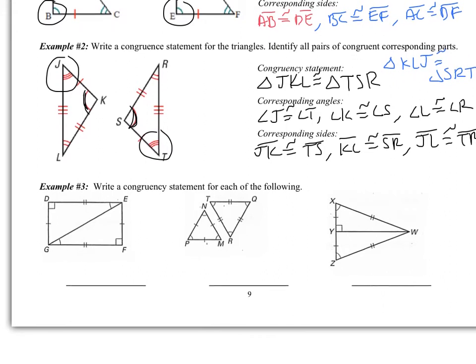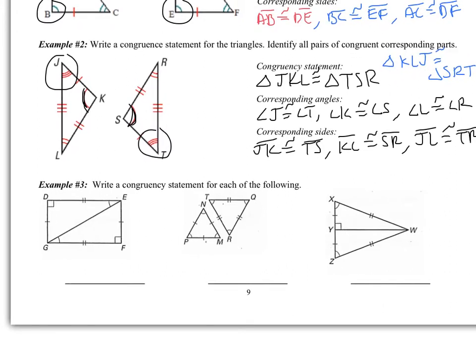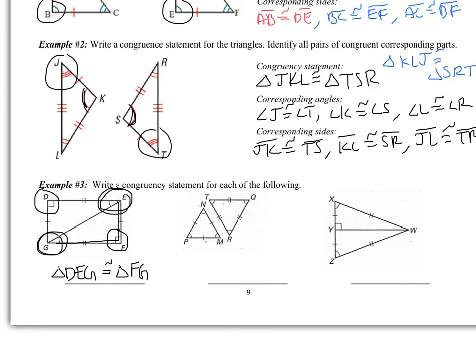Example three is a few more congruency statements. We'll do the first one together. I have triangle DEG is congruent to — D is my right angle, and the other triangle's right angle is F. E is my angle that has one tick mark; that's going to go with G. So F, G. And then looking at this triangle, the last vertex is going to be E again. You may notice I have EG here but GE here — that's not an issue. It's okay to have vertices that are flipped.